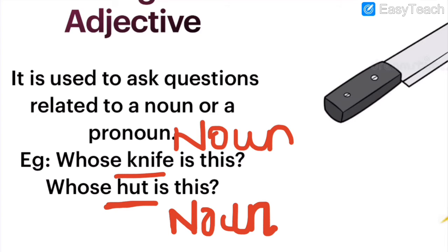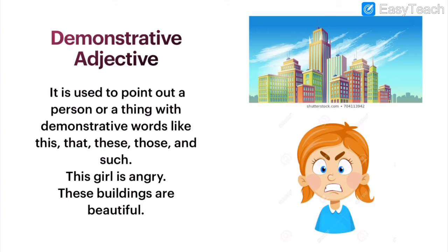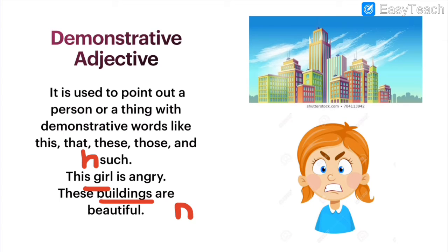Now we come to the demonstrative adjective. You must be going back to your chapter on pronouns — everything is linked. With pronouns you pronounce alone, but here with adjectives, the noun must be present. Demonstrative adjective is used to point out or show something — a person or a thing. For example, looking at this angry girl, you say 'this girl is angry' — 'this' is the demonstrative adjective and 'girl' is the noun. Similarly, 'these buildings' — 'these' is the demonstrative word and adding a noun makes it a demonstrative adjective.